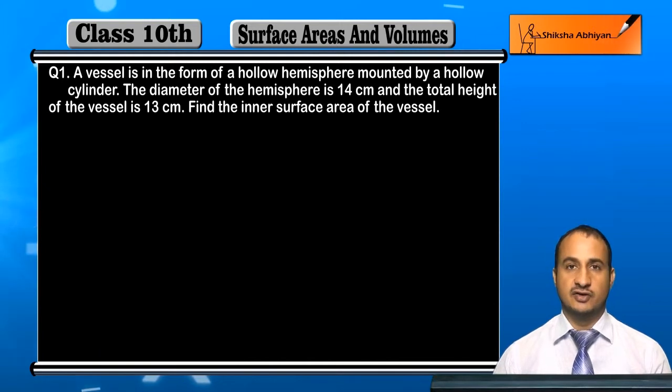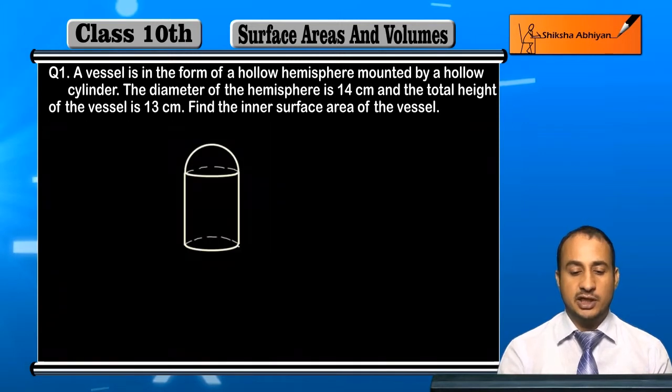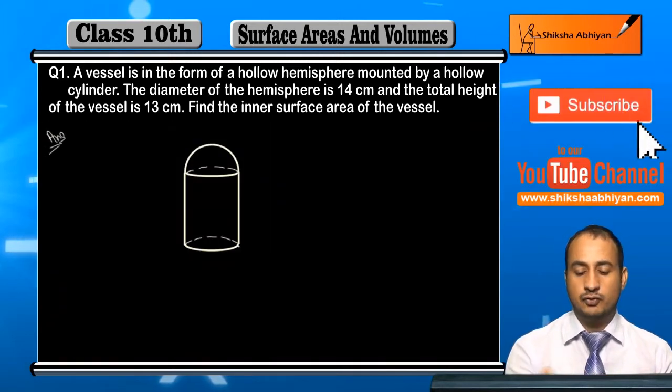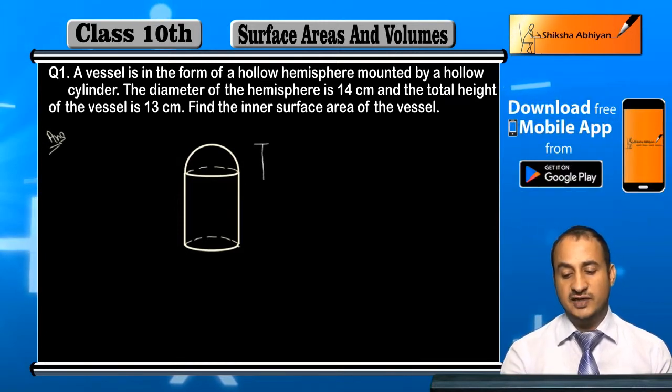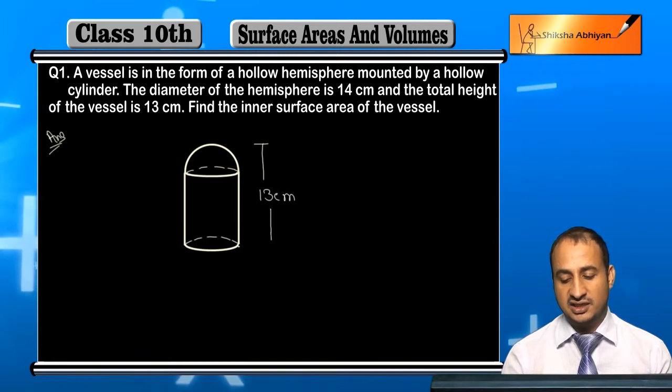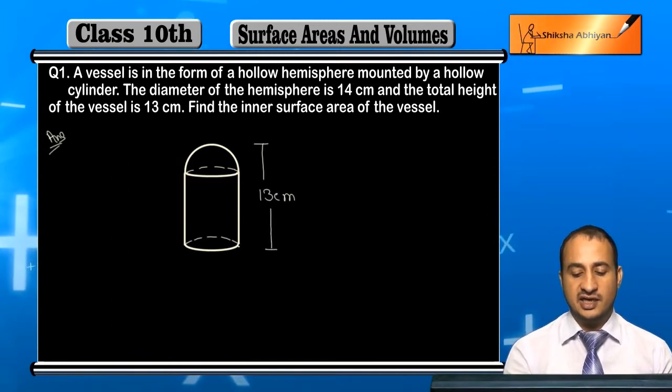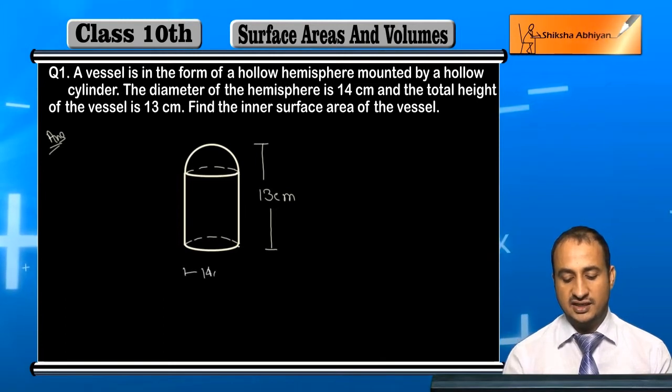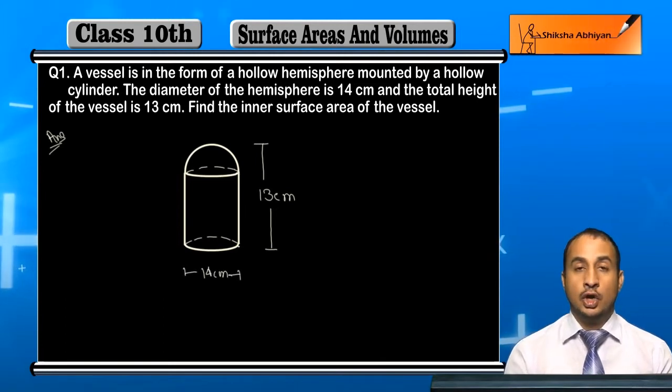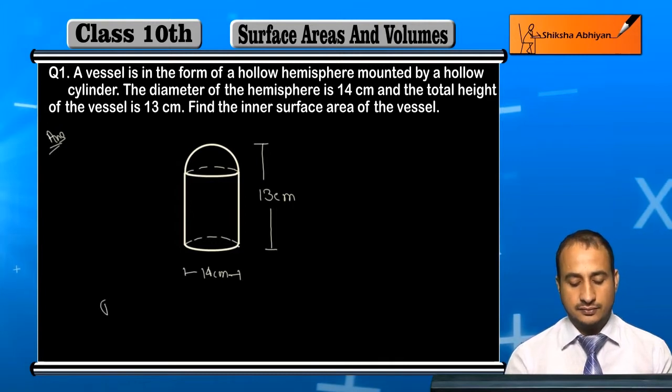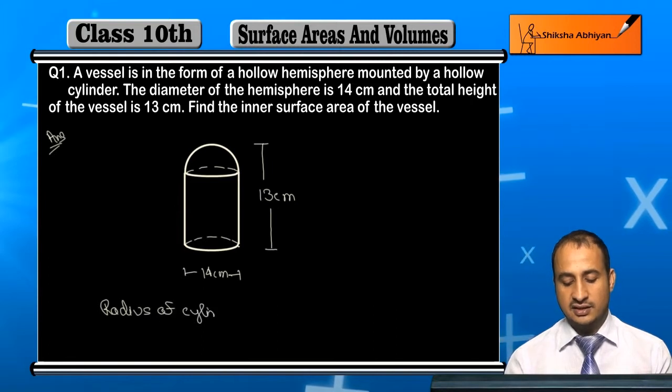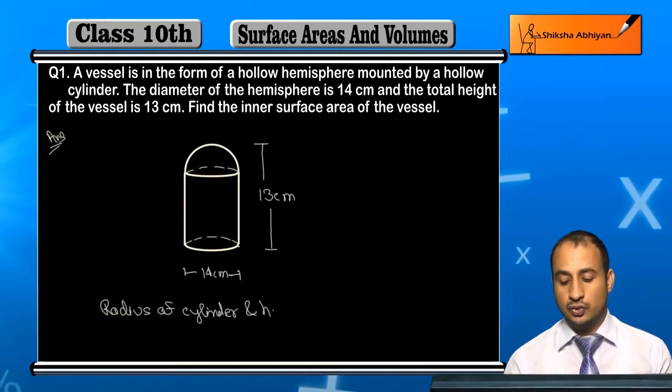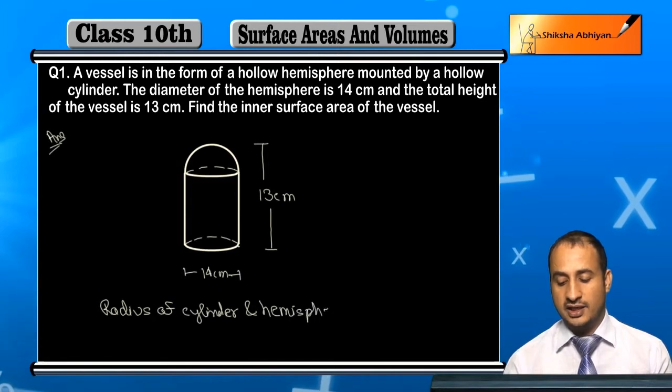So you can tell what the shape of the vessel is here. I will tell you about the shape - cylinder above and below. The total height is 13 cm and the diameter from here to here is 14 cm. Now you can see the radius of cylinder and hemisphere are the same, so this will be r = 14/2 cm which is 7 cm.